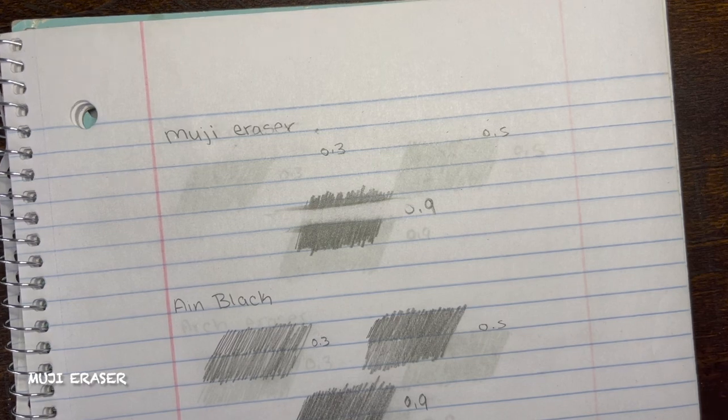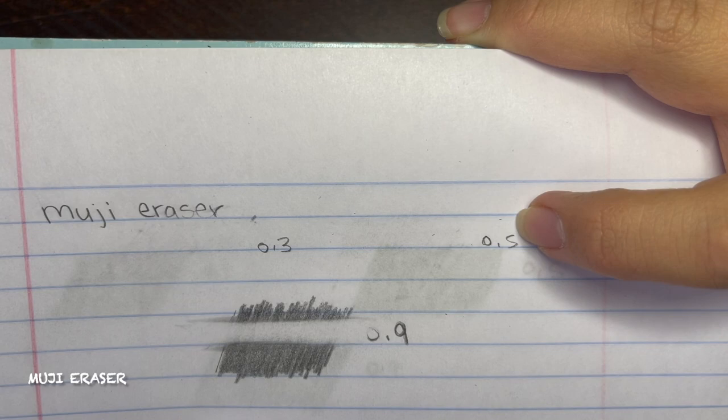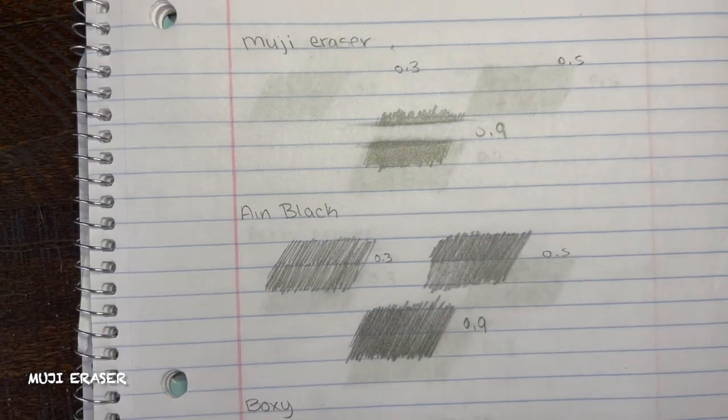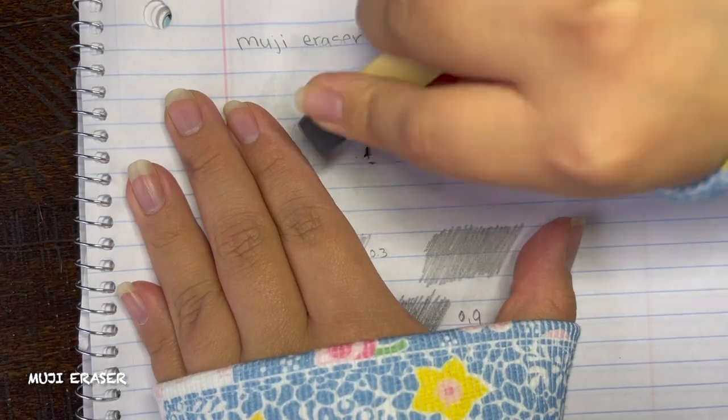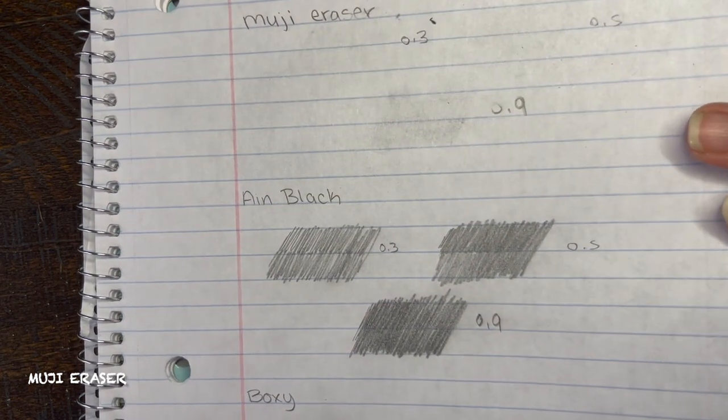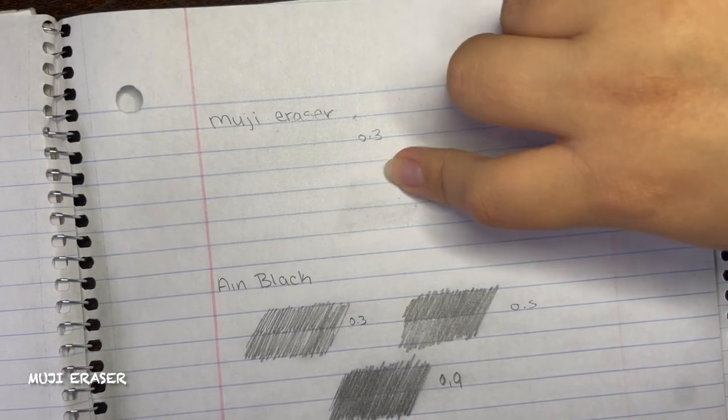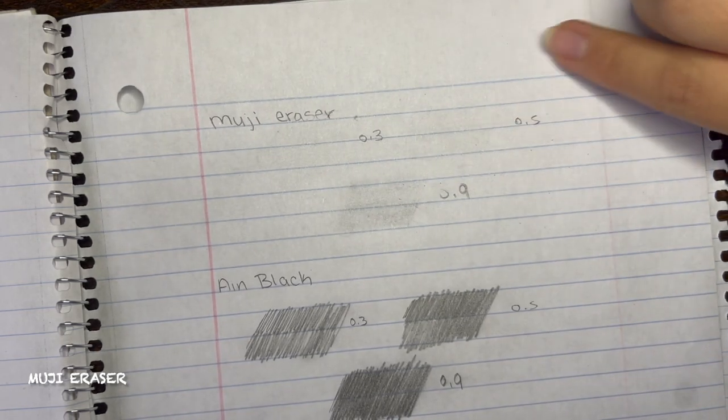It is a little hard to see now because of the other side of the page, but I do put a page under so that you can see it a lot clearer. As you can see it got rid of 0.3 and 0.5 easily, but there are still some left on the 0.9. Overall this Muji eraser is great, but let's go on with the next one to see if there are even better ones.